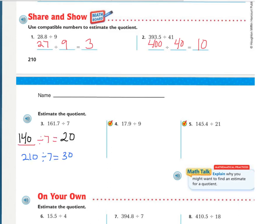In number three, twenty is the more reasonable answer, but the other answer would also be accepted. If you got all of these correct, work on the extra on-your-own problems, which will also be on your homework, and finish and turn in your exit ticket. If you got any incorrect, look back to find your mistake. If you still need assistance, please raise your hand.